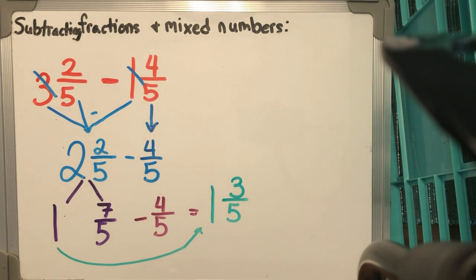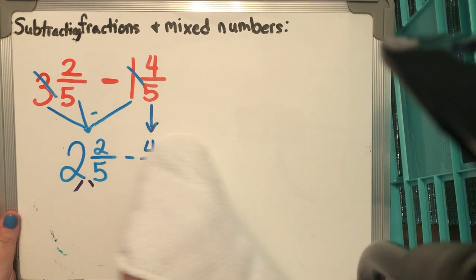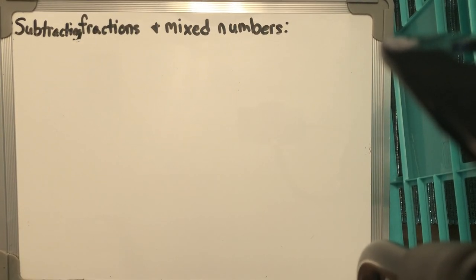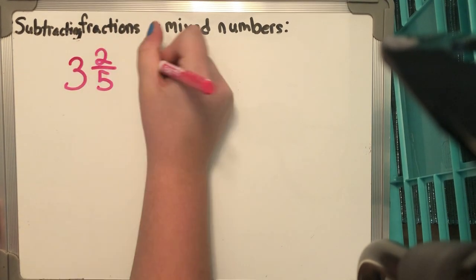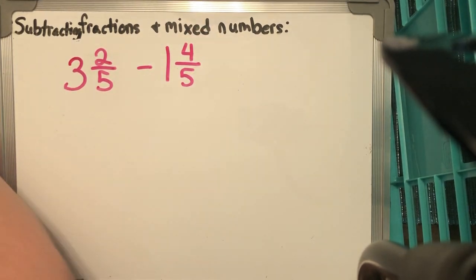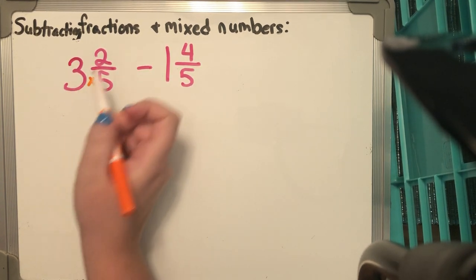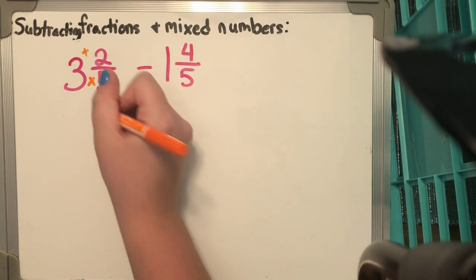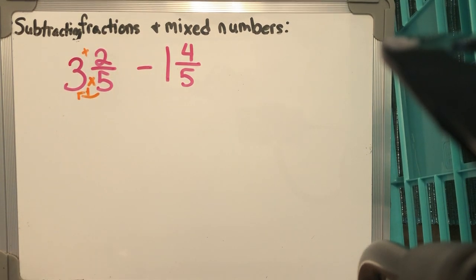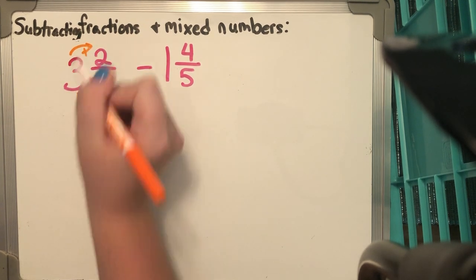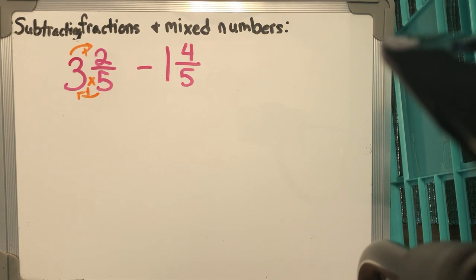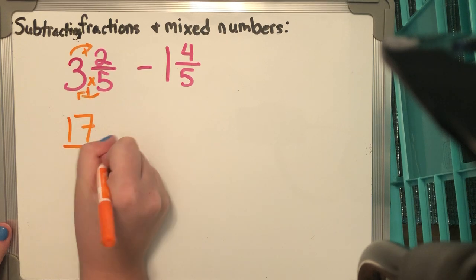7/5 minus 4/5 gives me 1 and 3/5 — that's the method I taught in the classroom. Now there's another way using improper fractions. Using the same problem, 3 and 2/5 minus 1 and 4/5: multiply the denominator by the whole number and add the numerator. So 5 times 3 is 15, plus 2 is 17, giving me 17/5.